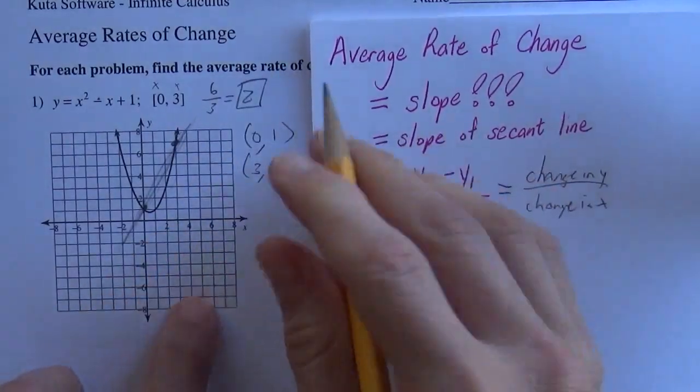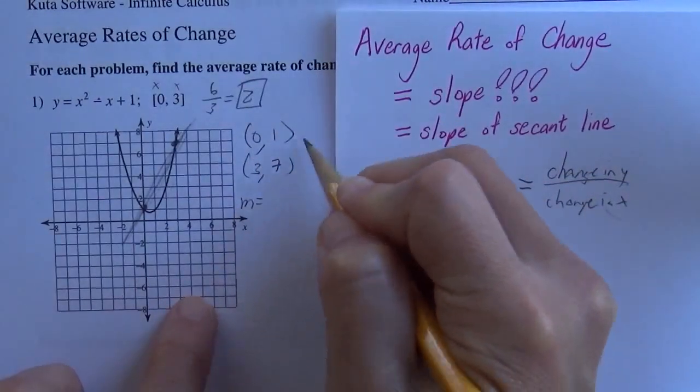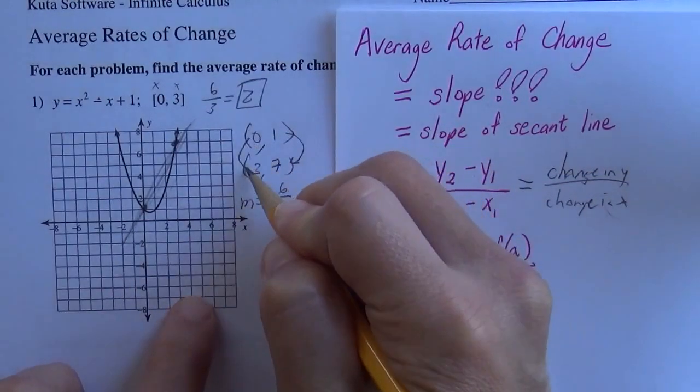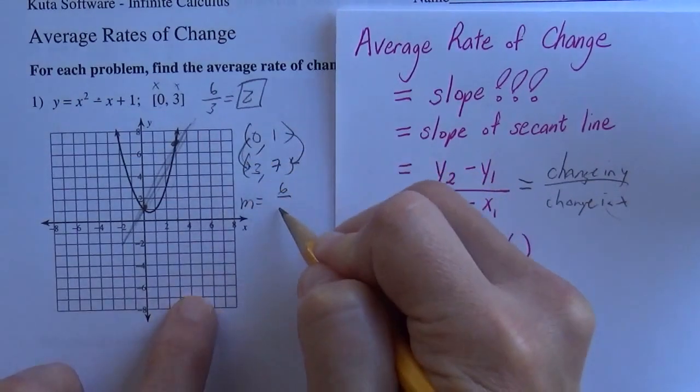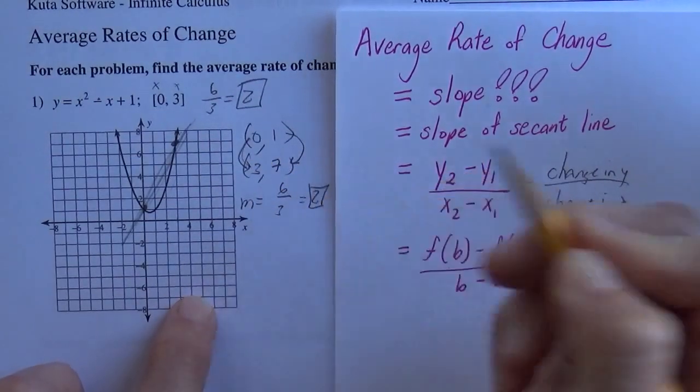Then I would just do my slope is my change in y, it looks like I went up 6, and my change in x, I went up 3. So 2.